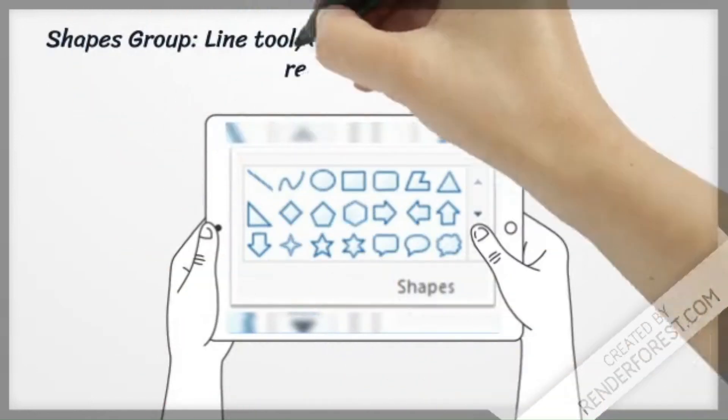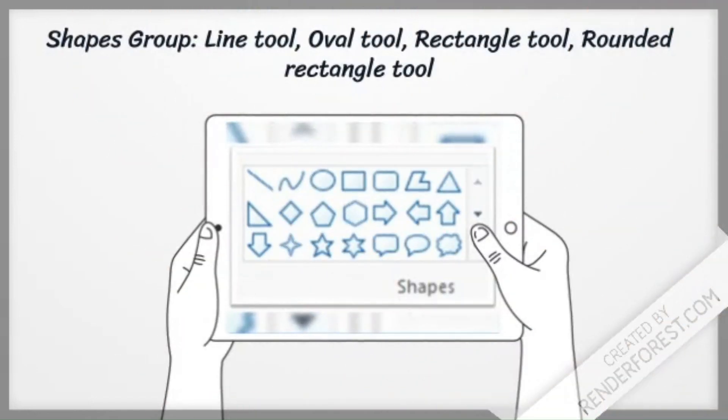Shapes Group: Line Tool, Oval Tool, Rectangle Tool, Rounded Rectangle Tool.